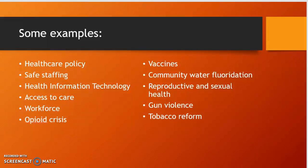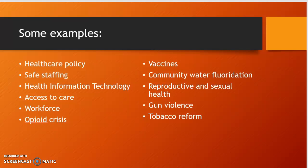Some examples are safe staffing, health information technology, patient privacy and HIPAA, things to protect the patient's electronic medical record, access to care, workforce, the opioid crisis, vaccines, community water fluoridation, reproductive and sexual health, gun violence, and tobacco reform. Those are just some examples — you don't have to pick from there.